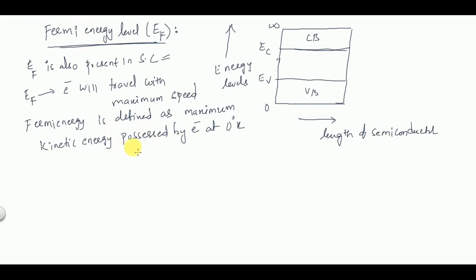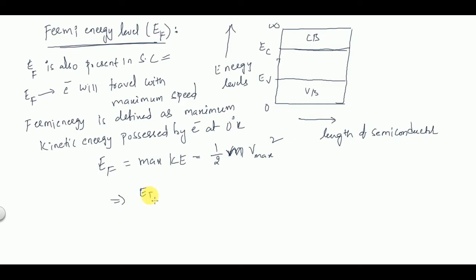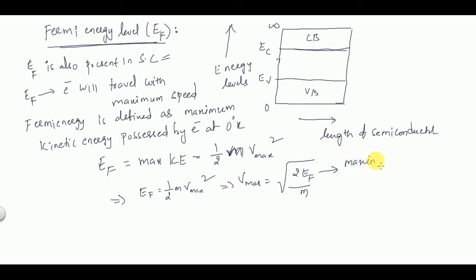Fermi energy E_F can be written as the maximum kinetic energy possessed by the electron: E_F = ½mv²_max, where m is the mass of the electron. This implies v_max = √(2E_F / m). This equation represents the maximum velocity of the electron in terms of Fermi energy E_F.